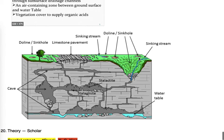We can see in this diagram a sinking stream going into a sinkhole, and the doline line, with limestone below. Here also we can see features attached to the ceiling — that is the stalactite — and on the ground, the stalagmite. These are depositional features. These are caves.